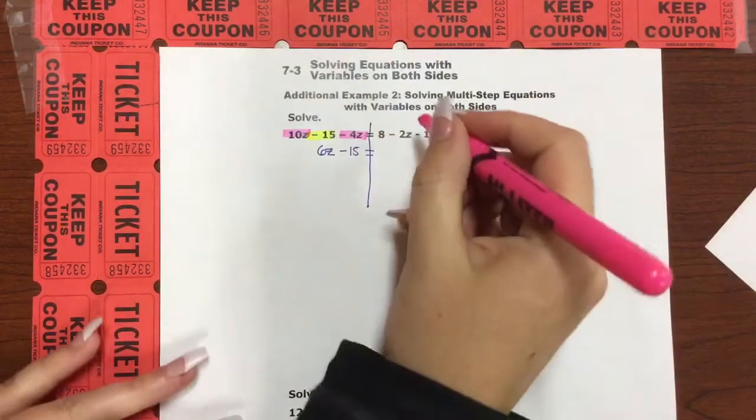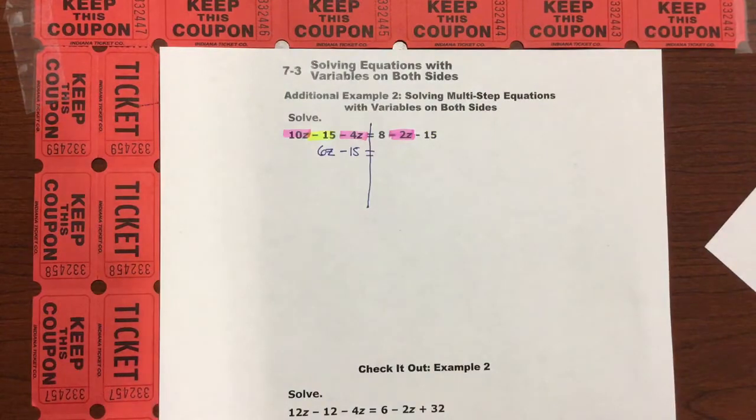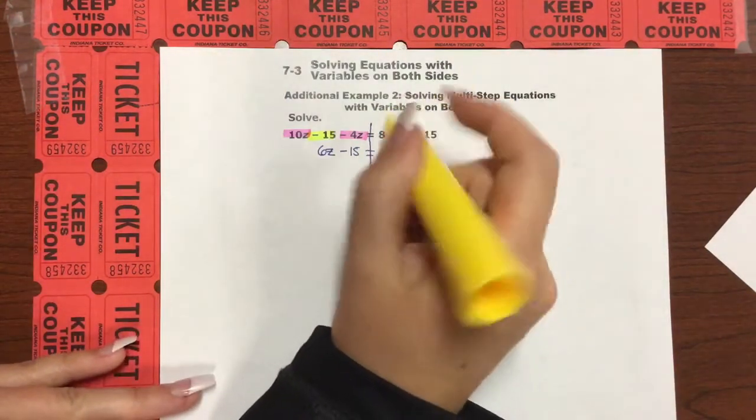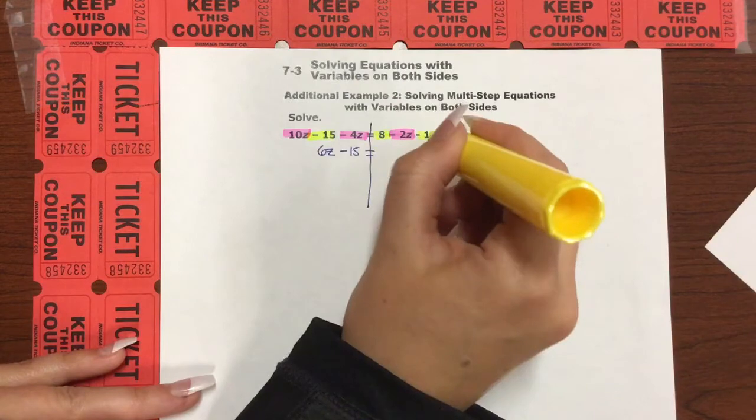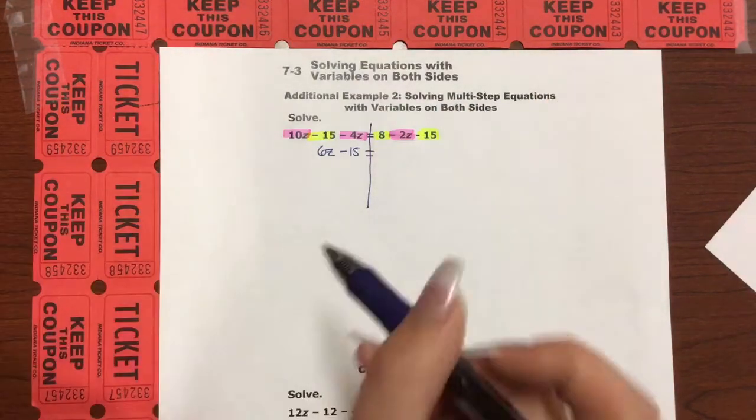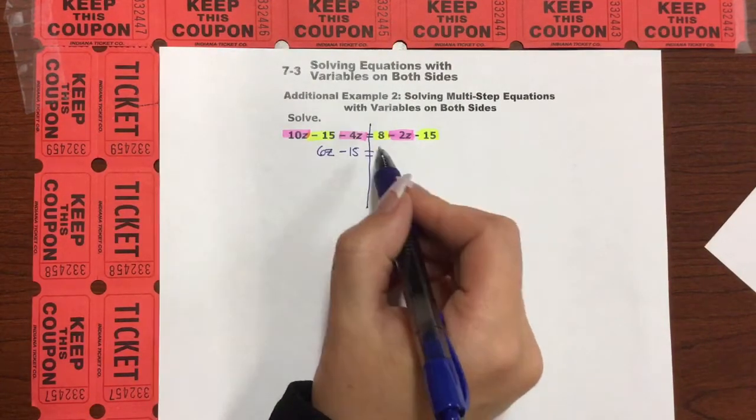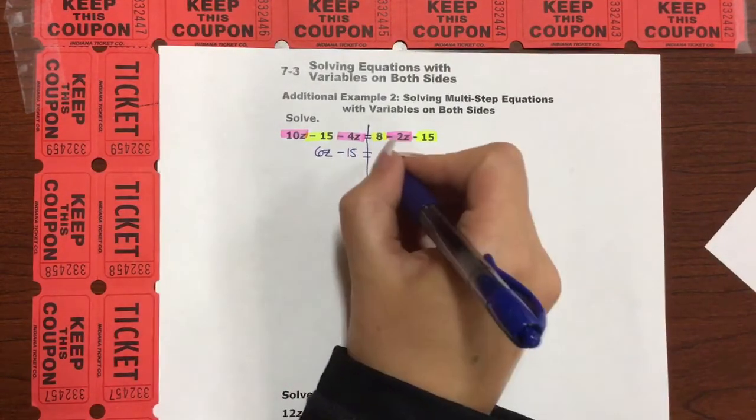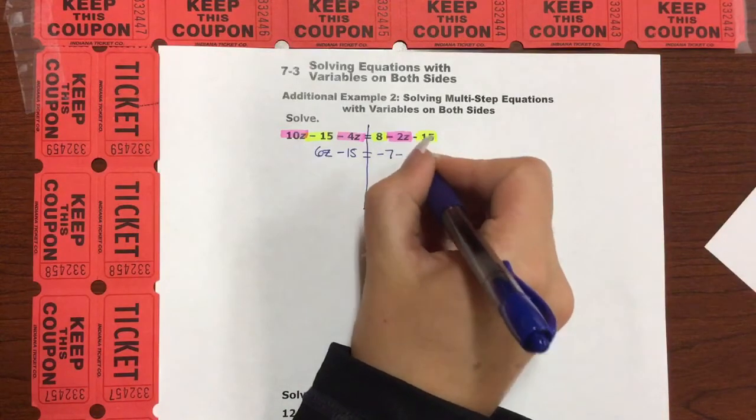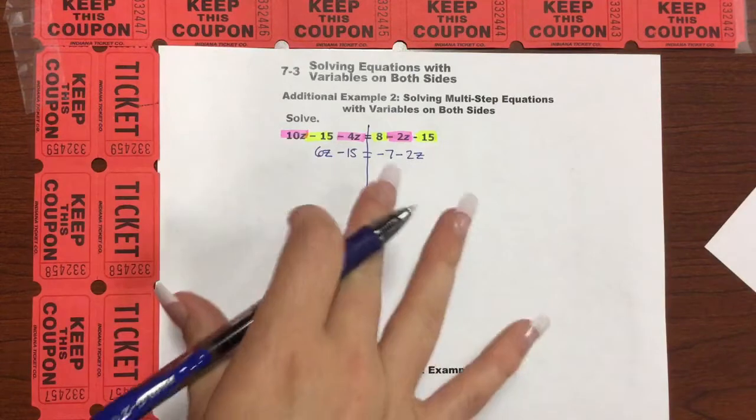Okay, and then what do we have over here on this other side of the equation? We have a negative 2z, but that is the only z I see, and then I see a couple of constants. So it's not a lonely constant. This constant has a friend, and we need to combine them. So when we do that, we have 8 minus 15, which would be a negative 7, and then just drop down that negative 2z. Perfect. Now we have this simplified, this simplified.